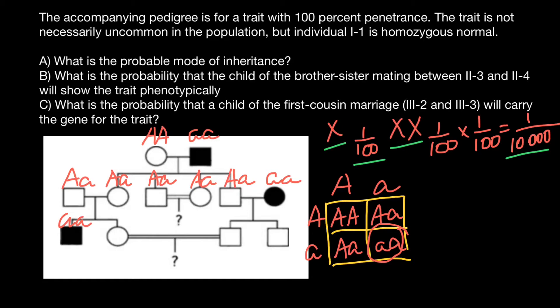And by the way, we can now answer question B: what is the probability that the child of the brother-sister mating between 2-3 and 2-4 will show the trait phenotypically? To show the trait phenotypically, the child has to be homozygous recessive, and the answer is going to be one quarter for heterozygous parents.